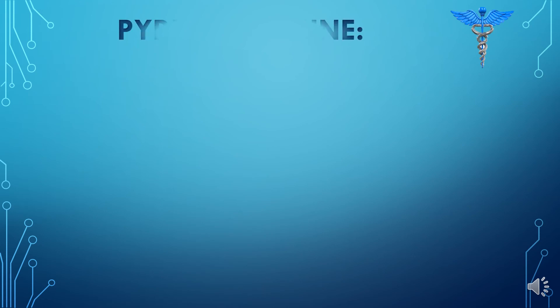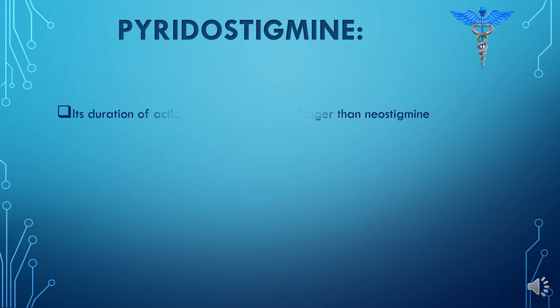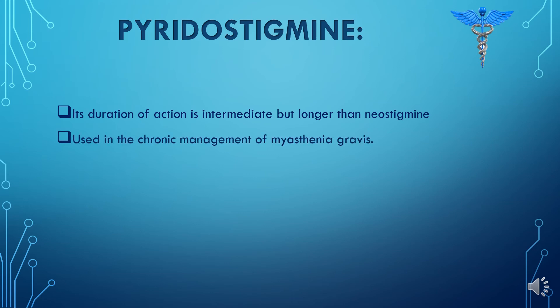We have pyridostigmine, which is another reversible indirect-acting cholinergic agonist. It binds loosely to the acetylcholinesterase enzyme and temporarily inhibits its activity. Its duration of action is intermediate but longer than that of neostigmine, making it suitable for the chronic management of myasthenia gravis.